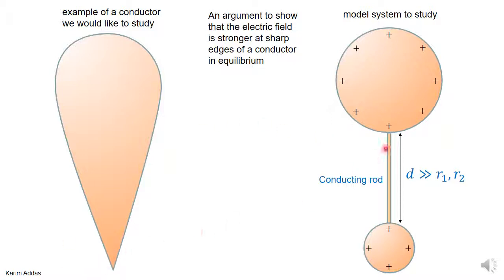In this model we're assuming that the distance between the two spheres is huge — much much bigger than the radius R1 of the large conductor and the radius R2 of the small conductor.